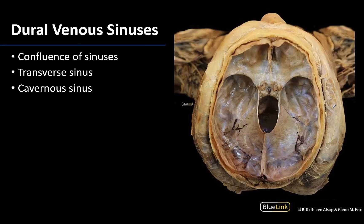Looking at a superior view with the brain also removed, the tentorium cerebelli is still present — one of those dural partitions located right here. The falx cerebri has been removed, though you can see a little bit of where it was. You can see the confluence of sinuses extending in this region, and from there the transverse sinuses will extend laterally from the confluence. We'll see a better view of the transverse sinuses in the next image.